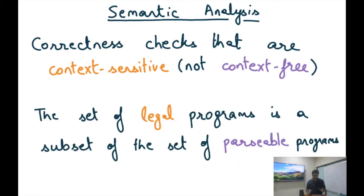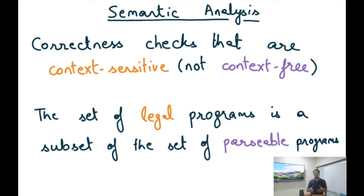The set of legal programs is a subset of the set of parsable programs. Some programs pass the lexing stage, then some pass the parsing stage. All programs that passed the parsing stage are parsable programs, and then the semantic analysis stage does further checks to determine the set of legal programs, which by definition is a subset of all the parsable programs.